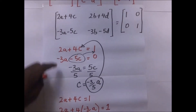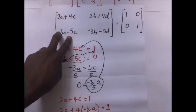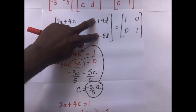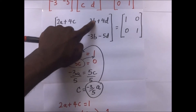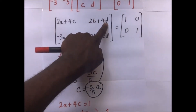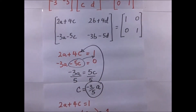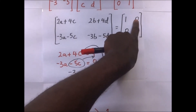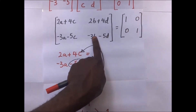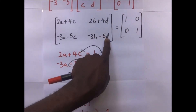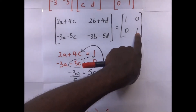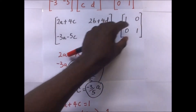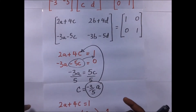Now we use the second pair of equations to get the values of B and D. Equation 1: 2B + 4D = 0, and Equation 2: -3B - 5D = 1. We combine these two simultaneous equations and solve them.